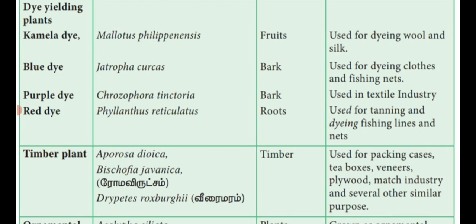Some plants yield dye — economic importance of dye-yielding plants in Euphorbiaceae. First, Camilla dye: Mallotus philippinensis, fruits used for dyeing wool and silk. Blue dye: Jatropha curcas, bark of the plant used for dyeing clothes and fishing nets. Purple dye: Chrozophora tinctoria, bark used in the textile industry. Red dye: Phyllanthus reticulatus, roots used for tanning and dyeing fishing lines and nets.